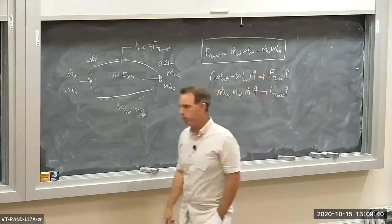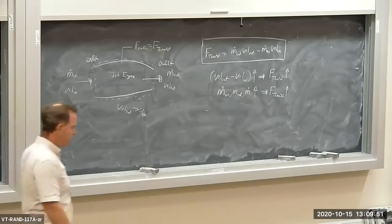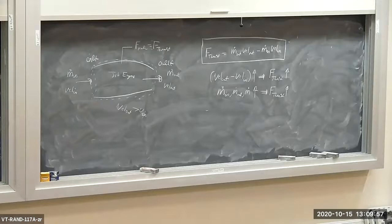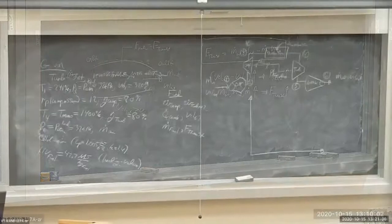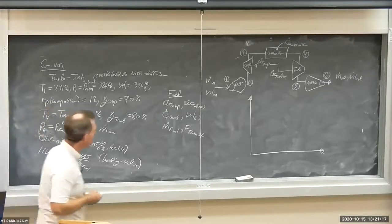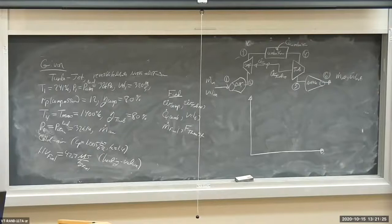Simple jet engine, pretty simple TS diagram. If we have irreversible processes, then we'd have to use isentropic efficiencies, making things more complicated. Let's stop here and do an example. We have a jet engine — a turbo jet with reversible adiabatic nozzle and diffuser. So applying the entropy balance to the nozzle and diffuser means isentropic.